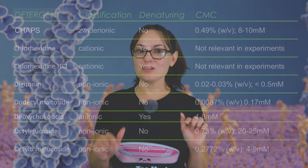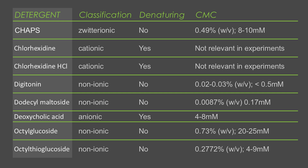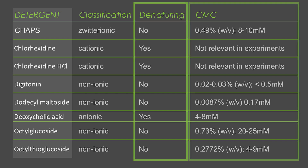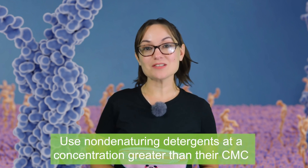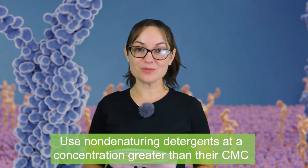This table here, which I'll also have linked below, summarizes the attributes of the detergents that I'll be talking about along with their classification, whether they denature proteins, and their CMC. For non-denaturing detergents used to solubilize membranes, it's important to use them at concentrations higher than their CMC to effectively disrupt lipid layers. I'll put a link to the article that has this table in the description for you to use as a reference.